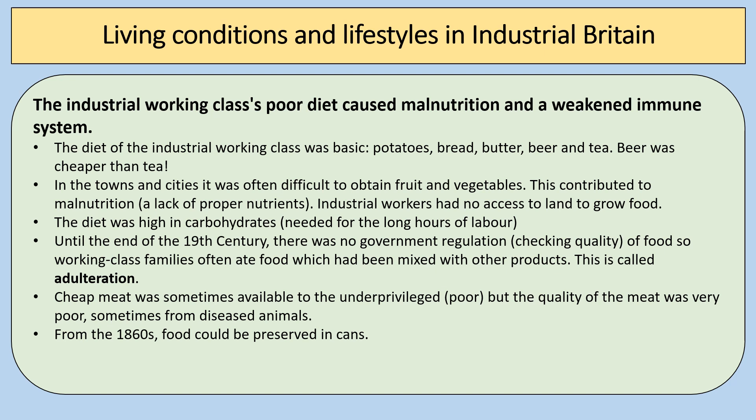In terms of diet, the industrial working class's poor diet caused malnutrition and weakened immune systems. Their diet was basic — potatoes, bread, butter, beer and tea — but beer was actually cheaper than water, so alcohol was a huge problem in the 19th century. It was difficult to obtain fruit and vegetables in towns and cities, contributing to malnutrition. Industrial workers had no access to land to grow food, unlike in the medieval and early modern period. The diet was high in carbohydrates for the energy needed for long hours of labour. Until the end of the 19th century there was no government regulation of food, and working class families often ate food mixed with substitute products — known as adulteration — such as chalk mixed into flour.